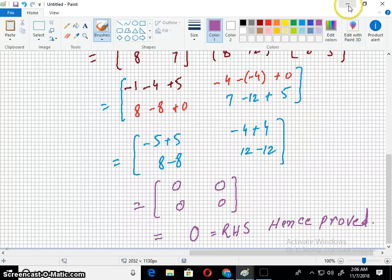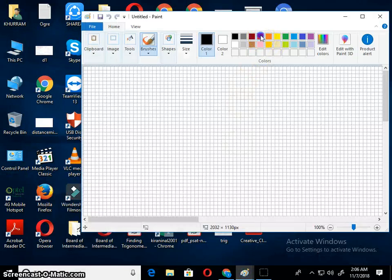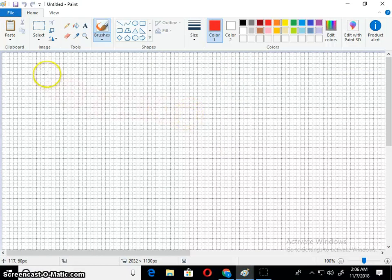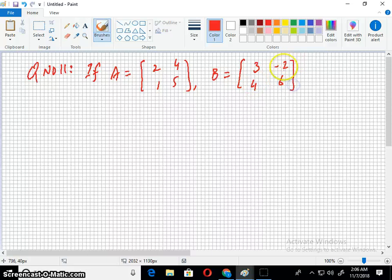Let's move quickly to the next question. The next question is question number 11. If A equals [2, 4; 1, 5], B equals [3, -2; 4, 6], then verify that (A + B)ᵀ = Aᵀ + Bᵀ.